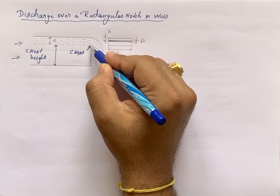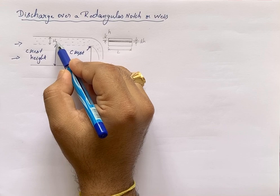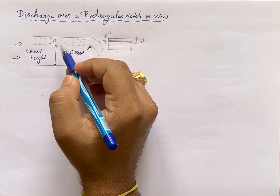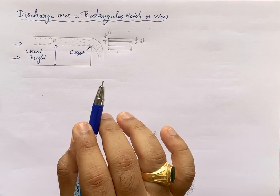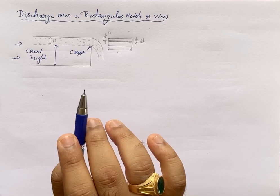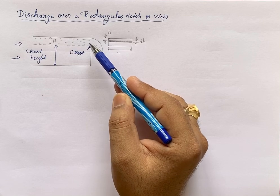Above this, the head over the notch is measured as H. The notch may be defined as an opening in the side of a tank or small channel such that the liquid surface in the tank or channel is below the top edge of the opening.